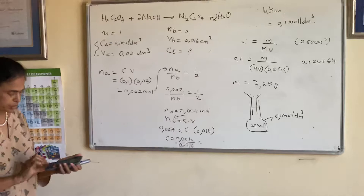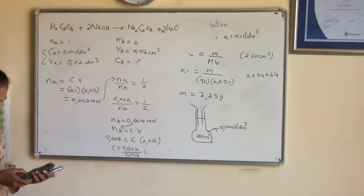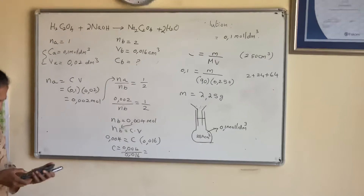Doing the calculation: 0.004 divided by 0.016 gives the concentration as 0.25 mol per dm³. This is how we do the calculations using titration.